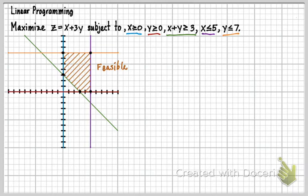So now let's see what those points are. This is going to be (3,0), the next one is (5,0), the next one is (5,7), the next one is (0,7), and the last one is (0,3).